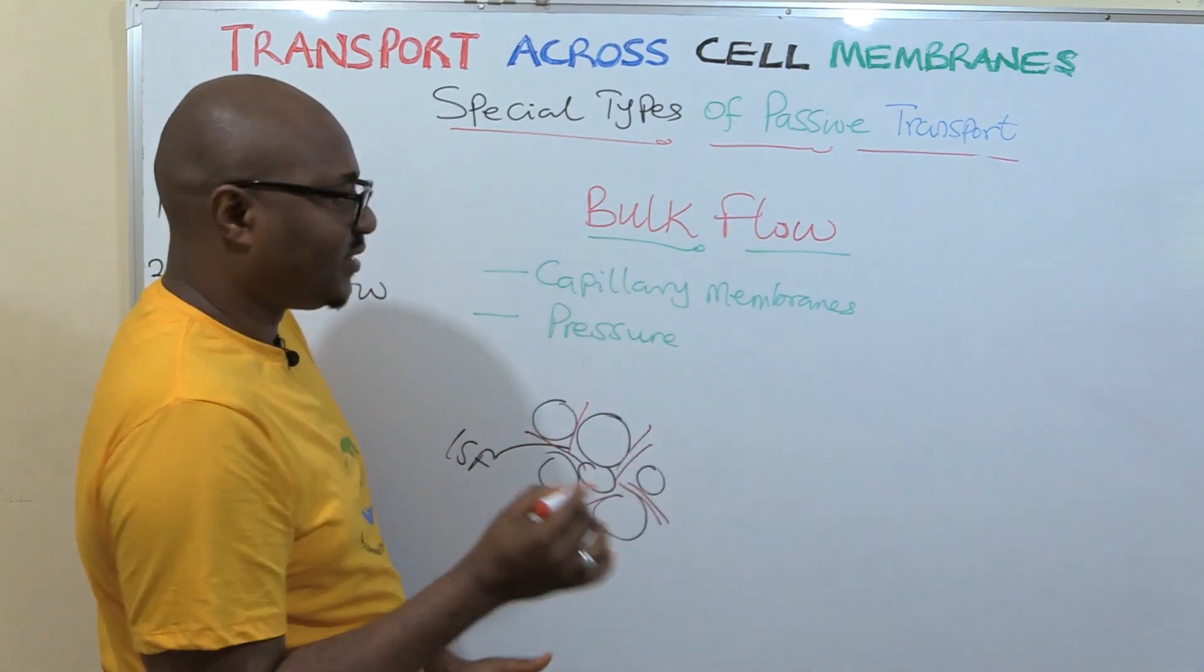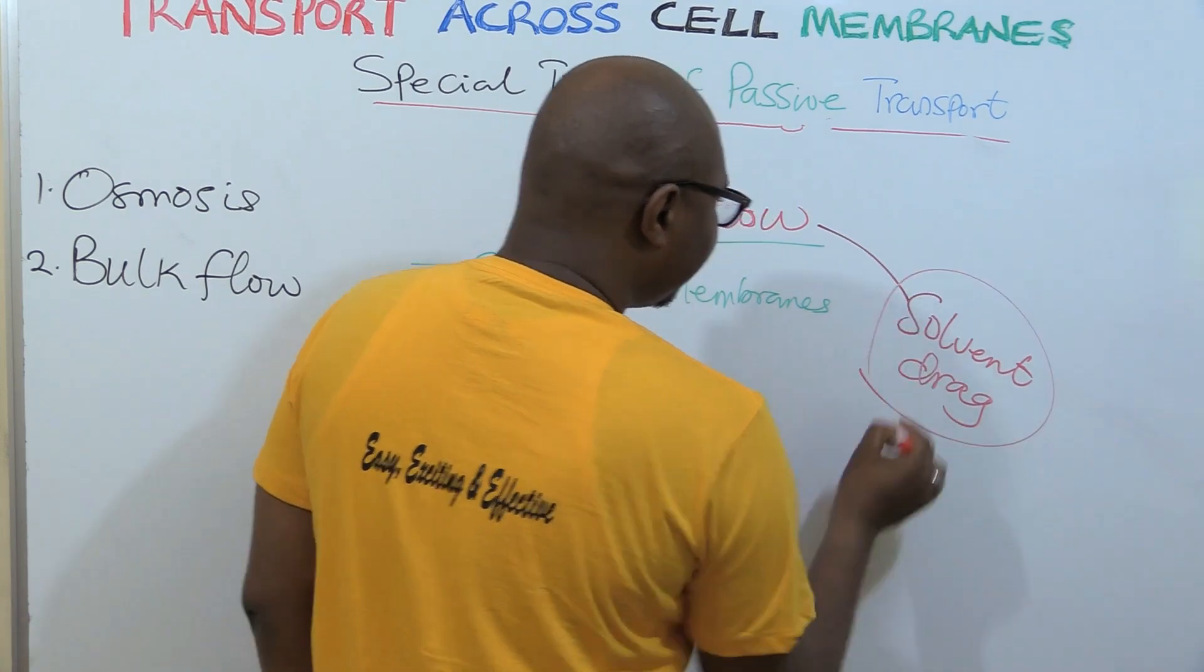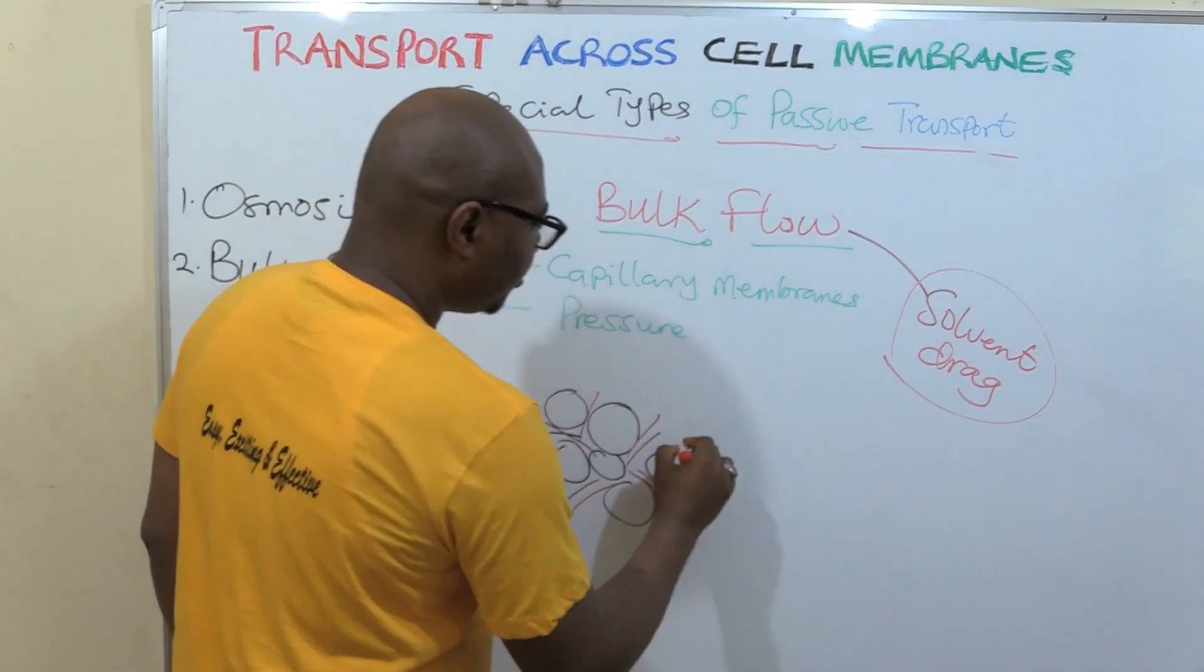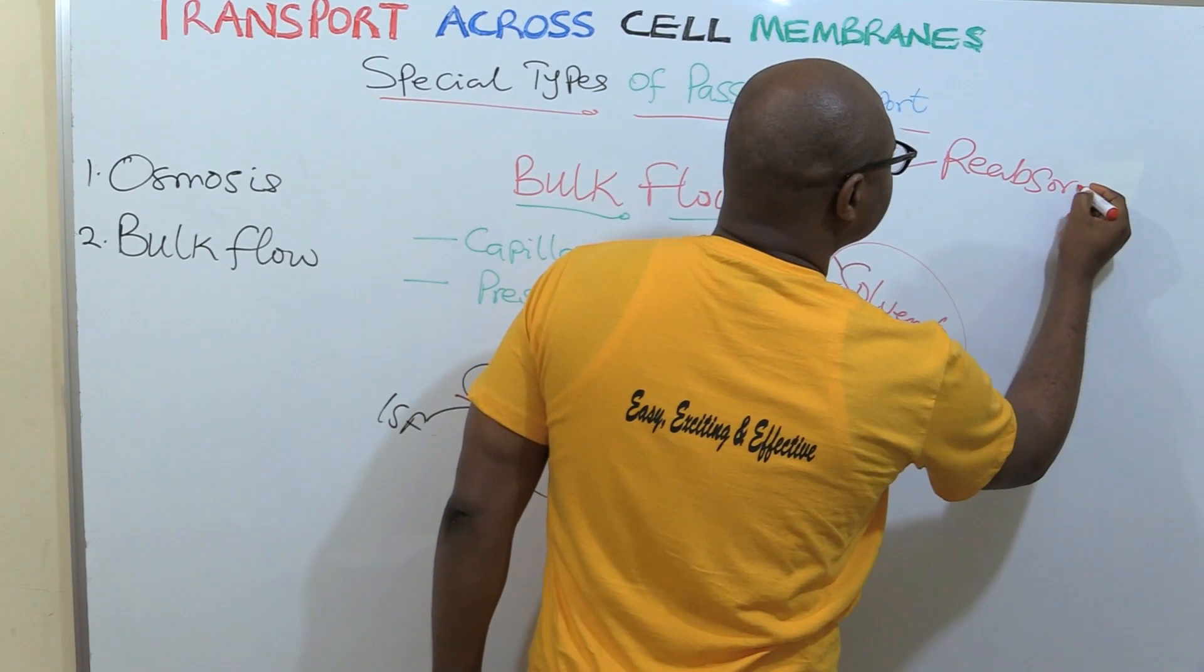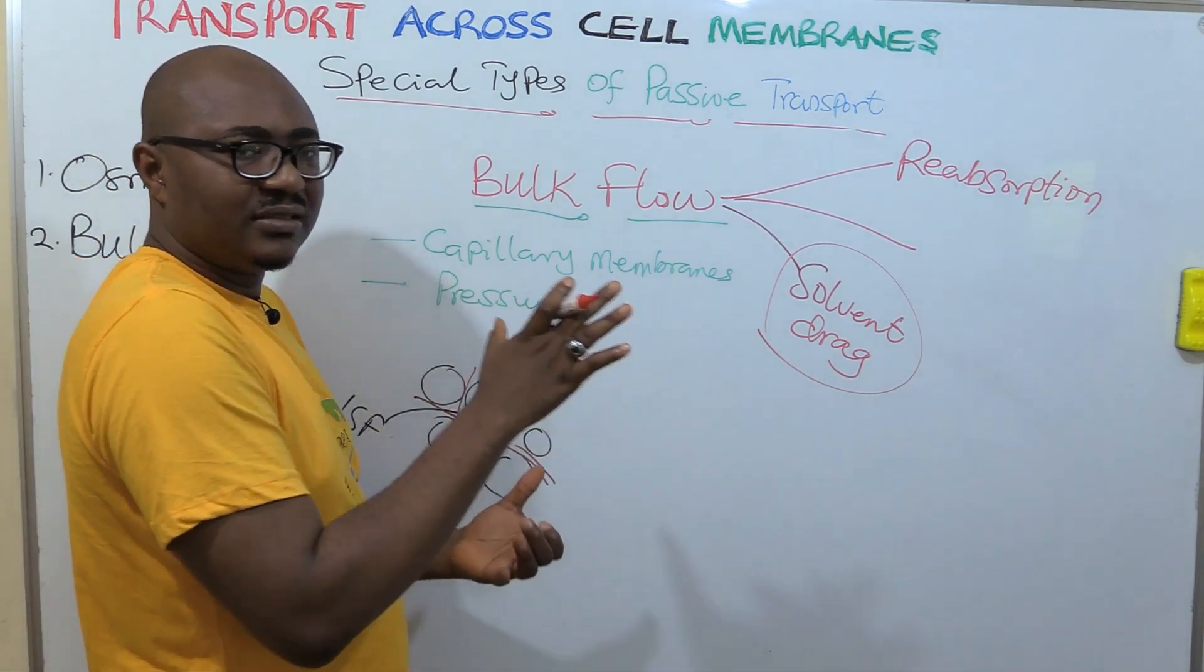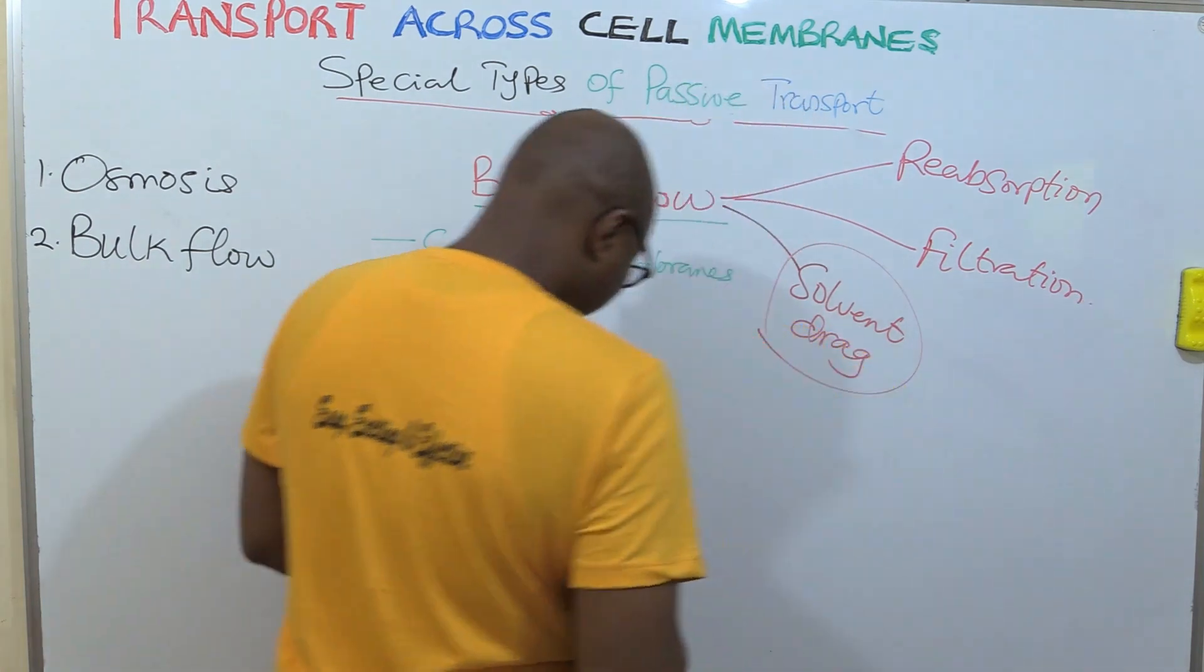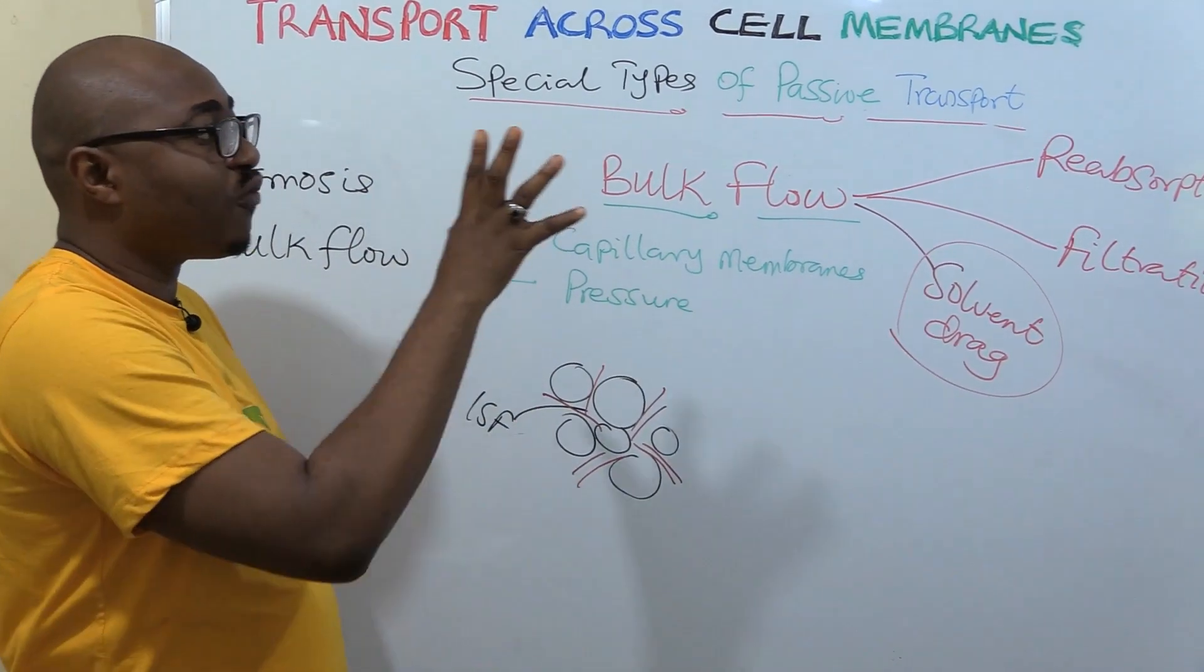In capillaries, there are blood vessels. So, the blood pressure is what is pushing the water either into the capillaries or out of the capillary. So, that force which water is going, it now drags the solute that needs to be carried. So, we also call it solvent drag. So, bulk flow is also called solvent drag. When it is dragging substances from the interstitial fluid into the capillaries, we call it reabsorption. When the solvent is dragging solute from the capillaries into the interstitial fluid space, we call it filtration.